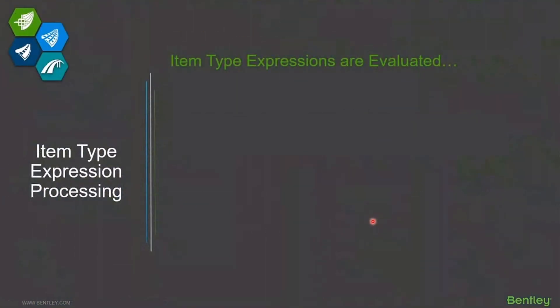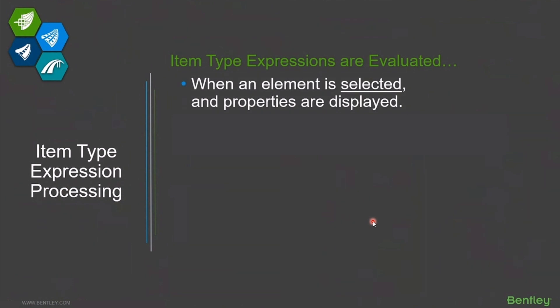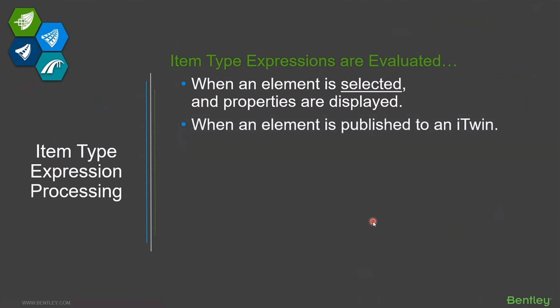Let's dig into this a little bit deeper. Think about when is an item type expression evaluated — when does it actually evaluate? It doesn't happen all the time. Item type expressions only evaluate when you touch an item and it pops up in the Properties dialogue. They also get evaluated when you publish to iTwin and do reports, but if you haven't brought it up in Properties and looked at it, it hasn't re-evaluated, so it could potentially be out of date.